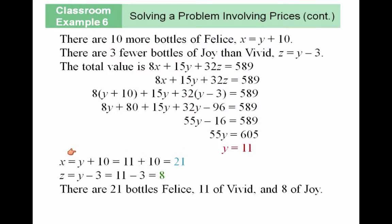Once you find Y, you can substitute it back into either of those equations in terms of X and Y to solve for X, and then substitute back to one of the equations in terms of Z and Y to solve for Z. So there are twenty-one bottles of Felice, eleven of Vivid, and eight of Joy. We can always check our answer by the way, to see if this adds up correctly.